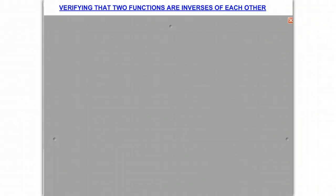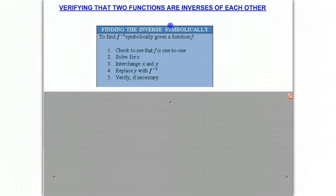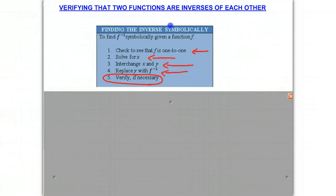Welcome to part two of our screencast. Today we're going to verify that two functions are inverses of each other. Just to review, we have learned how to find symbolically the inverse of a function. First we had to check to see if the function is one-to-one. Then we needed to solve for x, interchange the x and y values, replace the y with the inverse notation, and finally verify that the two functions are inverses. It's really important that we check to see if this is true.